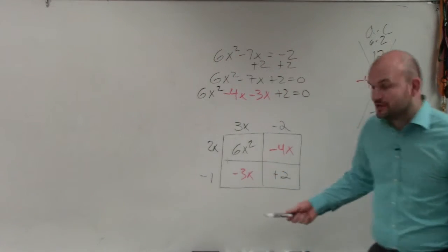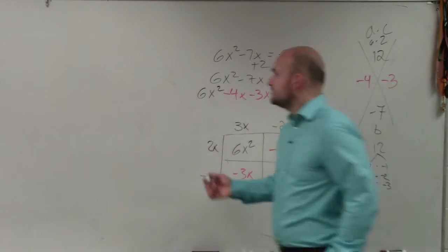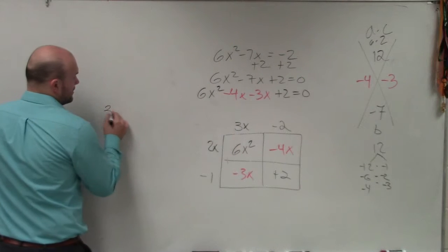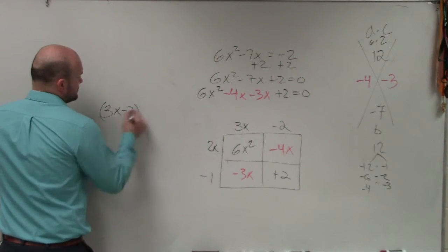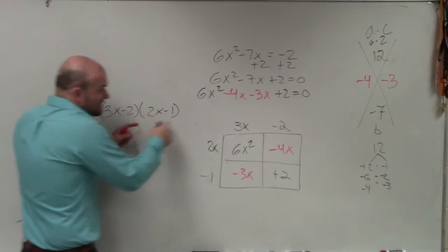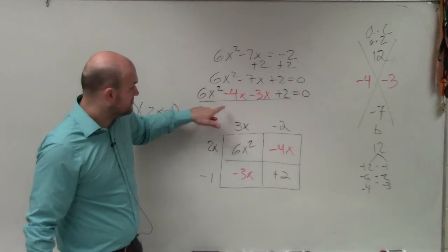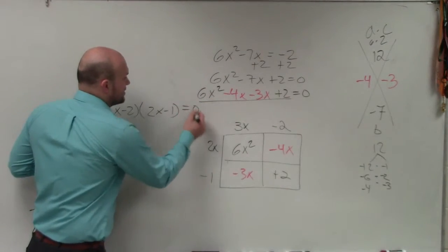And then you guys can check your answer. Negative 1 times negative 2, does that give you 2? Yes. So now we can state that 3x minus 2 times 2x minus 1. So this times this gives you that, right? This times this gives you that. Well, that is set equal to 0.